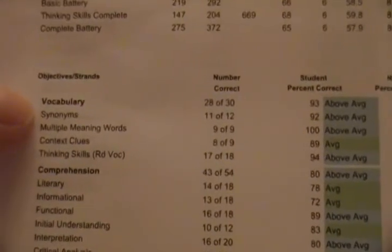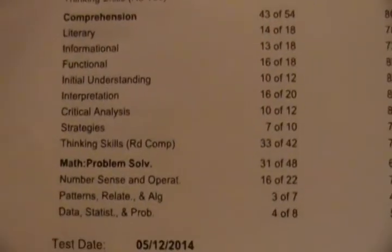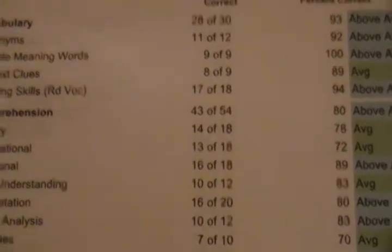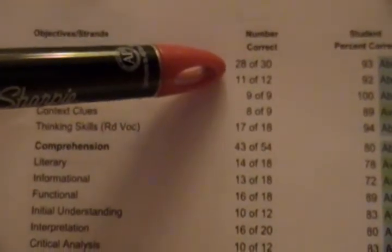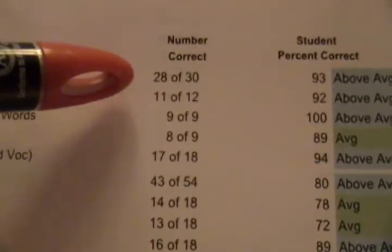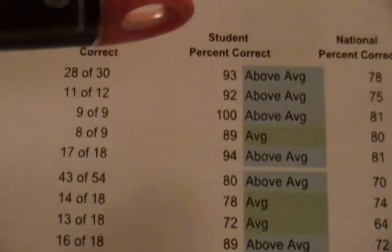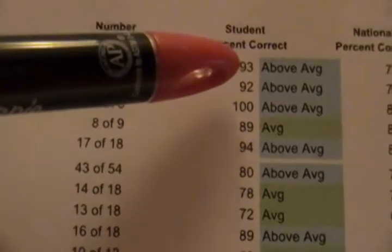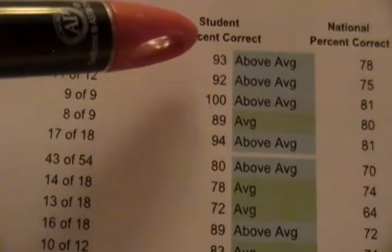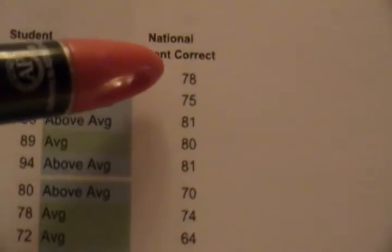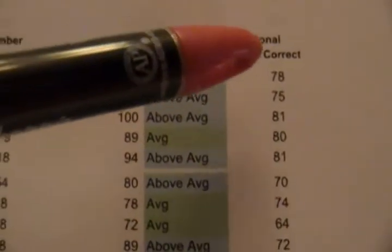So let's look at our subjects over here in the report. The things that are in bold are the subjects — vocabulary, comprehension, math problem solving. So what it does is give you an overall: 28 out of 30 problems correct, which gave the student a percent correct of 93. The national percent correct is 78, so the student scored above average. That's where they come up with 'above average.' Sometimes you move 10 points above the national percent correct and get above average; sometimes you've got to move 20 or 30.